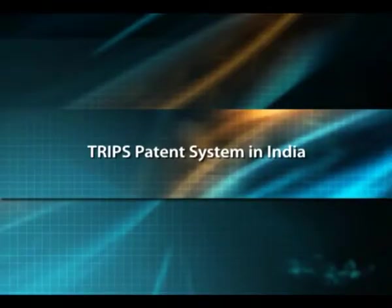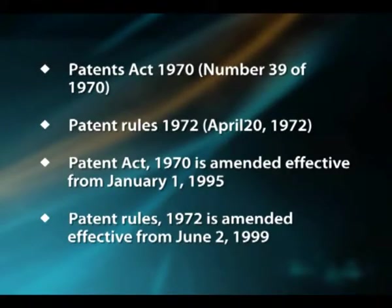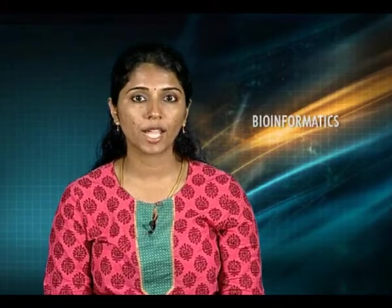The patent system in India is governed by the Patents Act 1970 and the Patent Rules 1972. The Patent Act 1970 and Patent Rules 1972 were amended effective from June 2nd, 1999. The TRIPS agreement came into effect on January 1st, 1995, and is to date the most comprehensive multilateral agreement on intellectual property. On December 27th, 2004, the central government issued the Patents Ordinance, amending the Indian Patent Act 1970 for the third time.